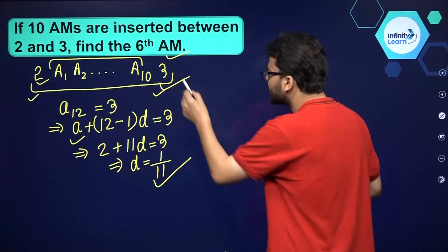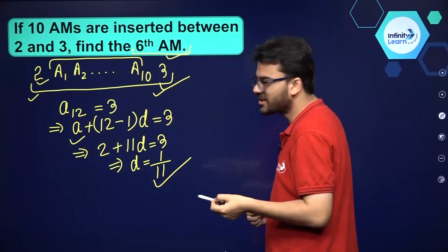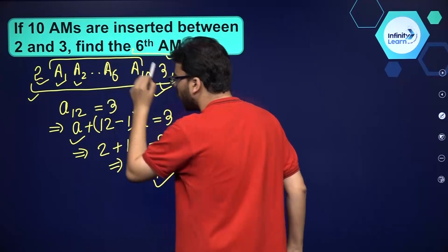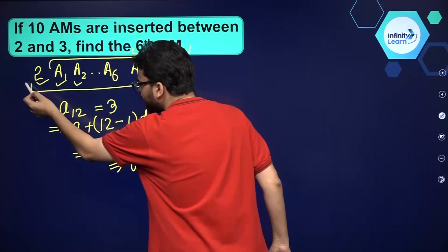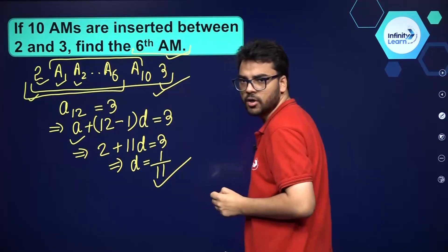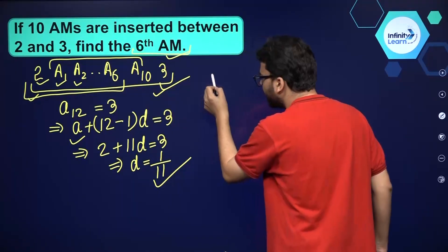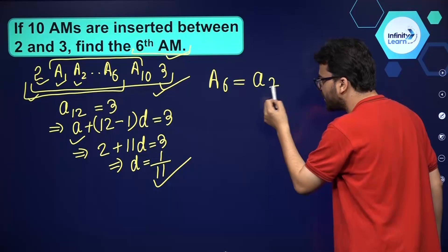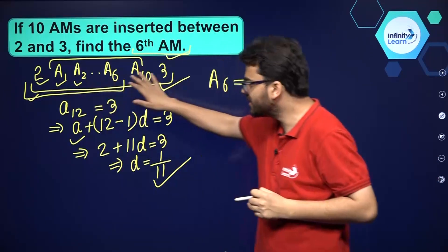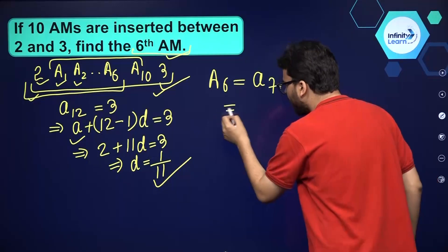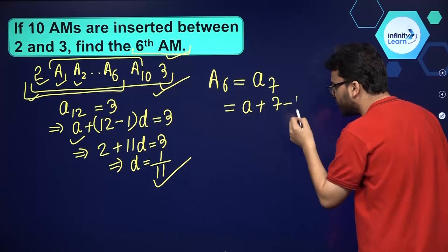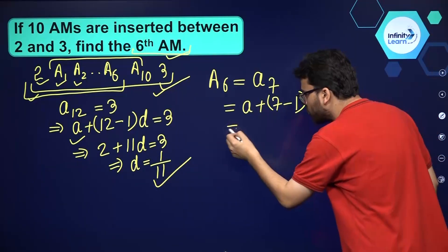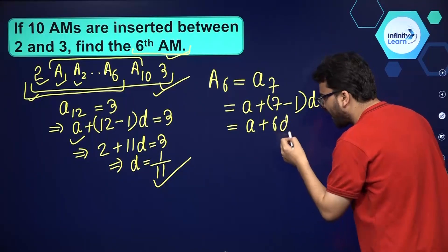Now we have to find the 6th arithmetic mean. The 6th arithmetic mean — A1, A2, ... A6 — but if you start counting from the very start, it starts from 2. So basically A6, or the 6th arithmetic mean, is the 7th term of this AP, because you are starting with 2. So that will be A plus 7 minus 1 into D, because the nth term of an AP is A plus N minus 1 into D, and that equals A plus 6D.